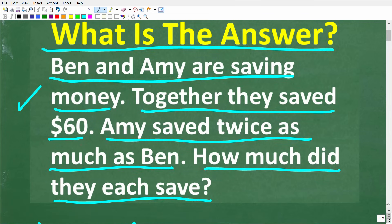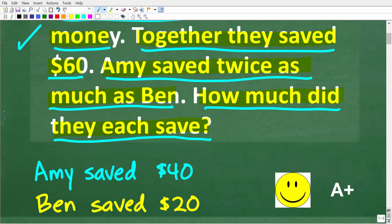One more time the question is: Ben and Amy are saving money, together they saved $60. Amy saved twice as much as Ben. How much did they each save? So let's take a look at the answer.